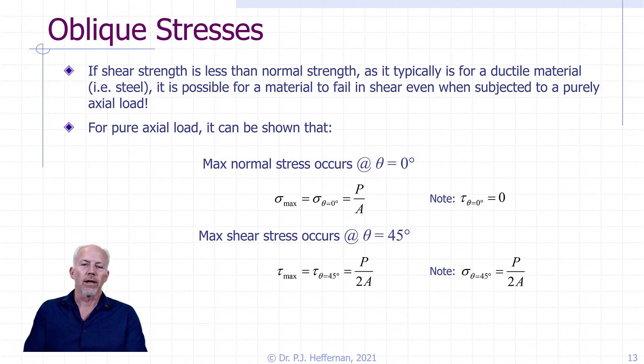However, if we turn our orientation to theta equals 45 degrees, at that point we will get a maximum shear stress. And tau max at that will be equal to our uniaxially applied load p divided by two times the area. It's also worth noting that the normal stress at that same orientation of 45 degrees has the same magnitude as the maximum shear stress, p divided by 2A.